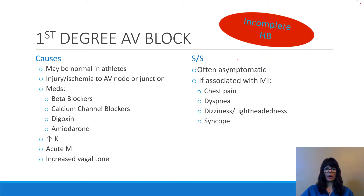Causes of first-degree AV blocks include: it may be a normal finding in athletes, but it may also be due to injury or ischemia to the AV node or junction causing the conduction delay. Certain medications can make the patient more prone, including beta blockers, calcium channel blockers, digoxin, and amiodarone. Hyperkalemia can also cause it, since potassium is very important in conducting electrical activity through the heart. Acute MI — which relates to ischemia and injury to the AV node — and any increase in vagal tone, stimulating the parasympathetic nervous system, can also predispose a patient to first-degree AV block.